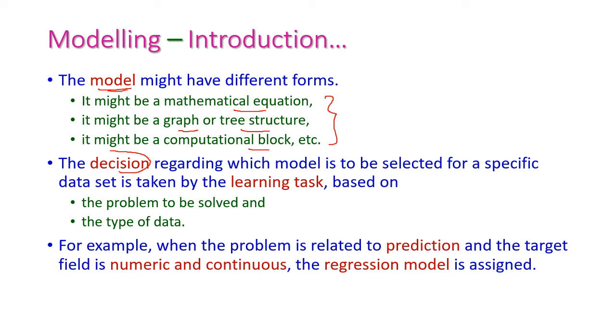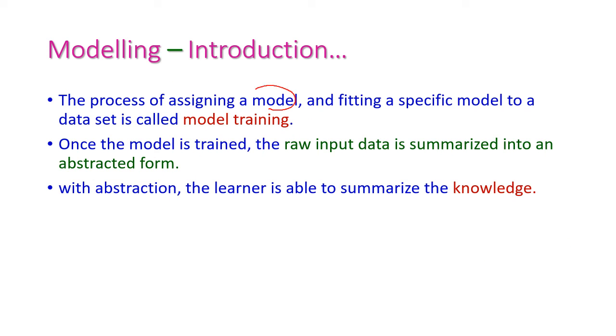Now we need to decide which particular model is suitable for our problem. This is called as learning task. The learning task is based on the problem to be solved and the type of data. For example, our problem is prediction problem and the data are numeric and continuous data, then obviously we have to select the regression model. This is a category that will come under supervised learning model.